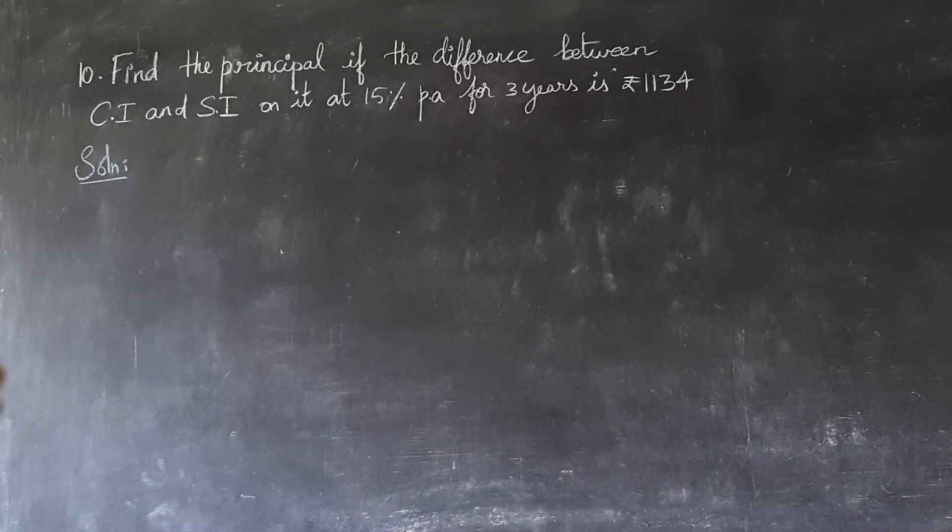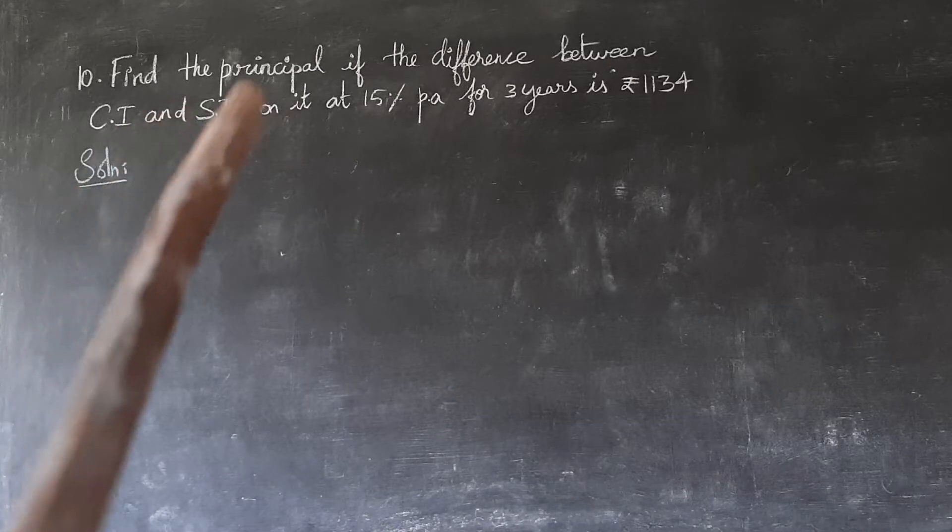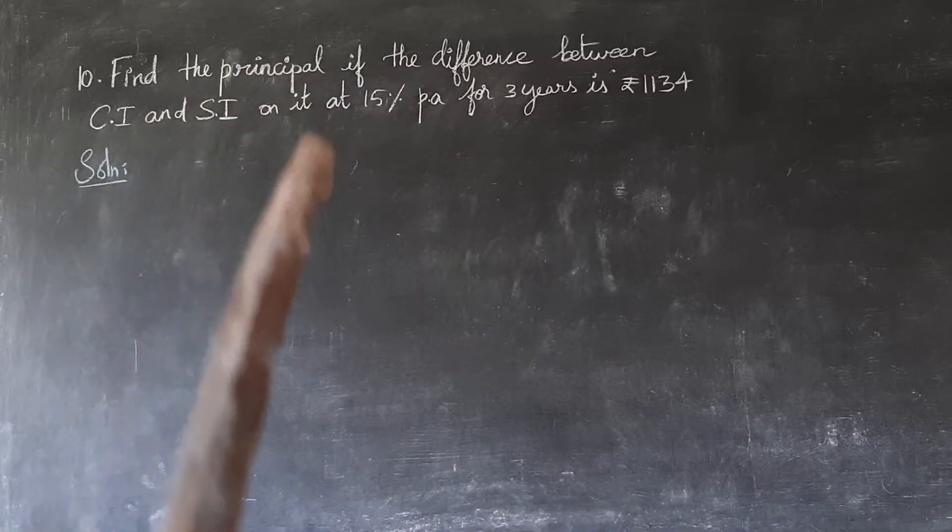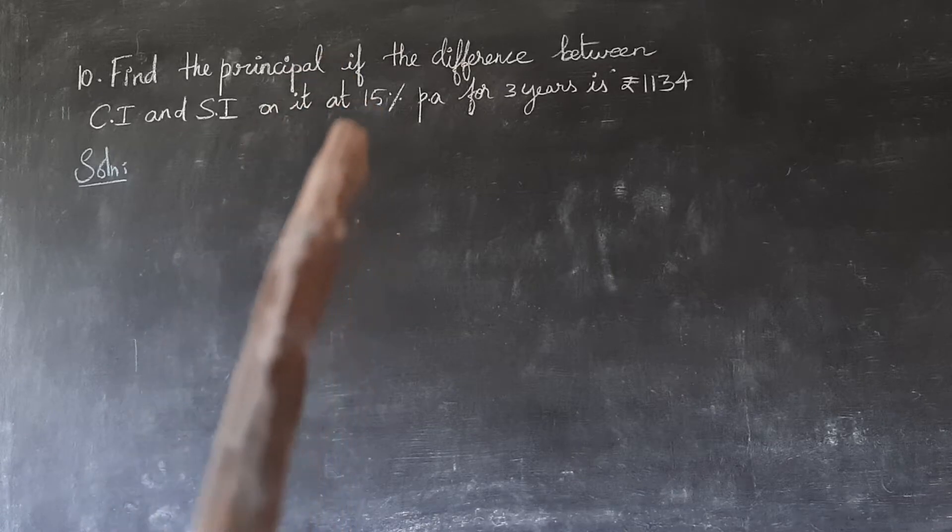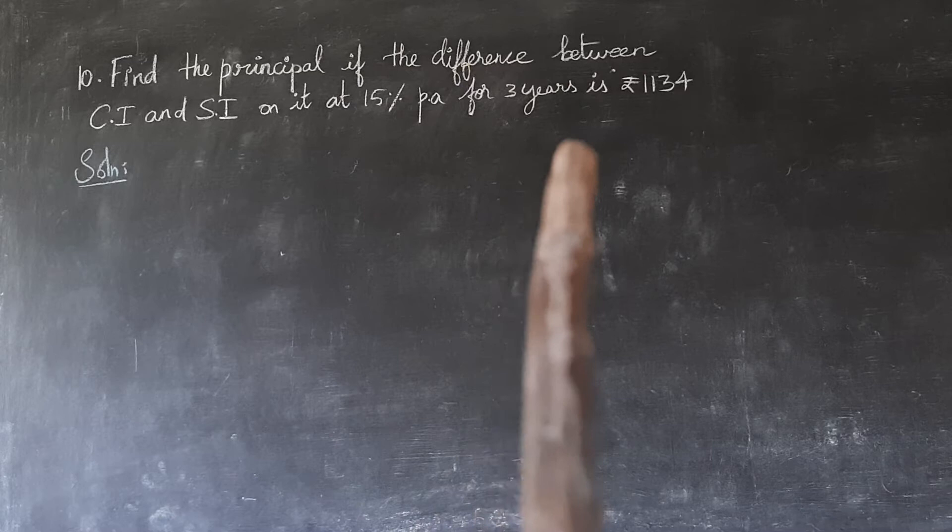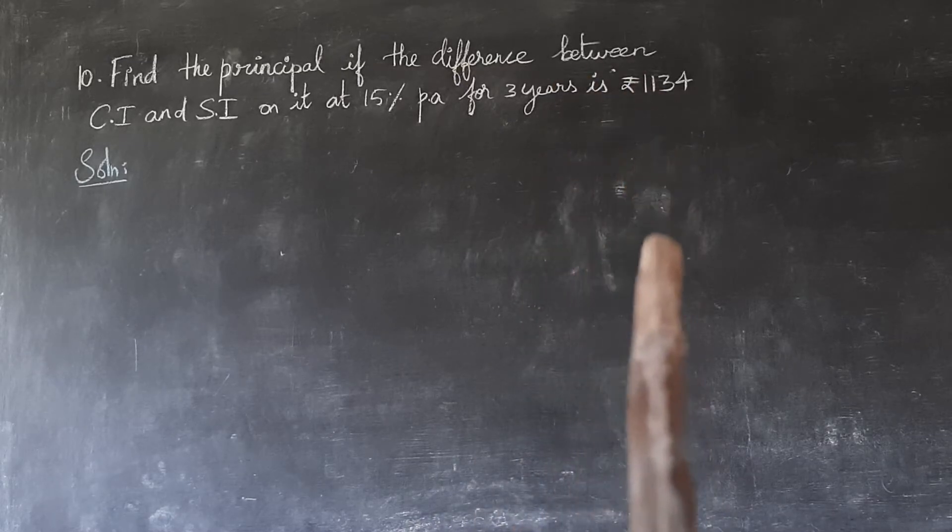Hello children, let's see the tenth sum from exercise 4.3. Find the principal if the difference between compound interest and simple interest on it at 15% per annum for 3 years is rupees 1134.